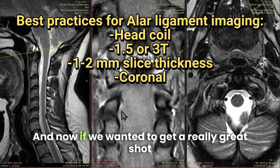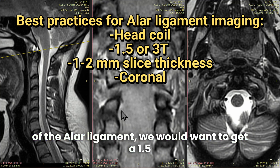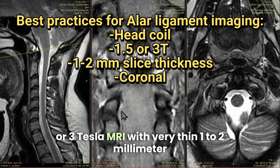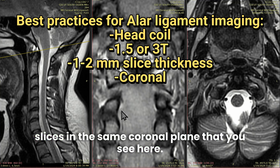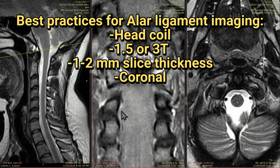Now, if we wanted to get a really great shot of the alar ligament, we would want to get a 1.5 or 3 Tesla MRI with very thin 1 to 2 millimeter slices in the same coronal plane that you see here.